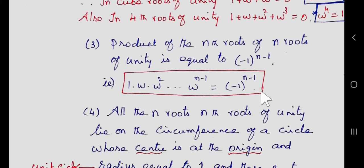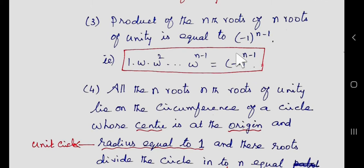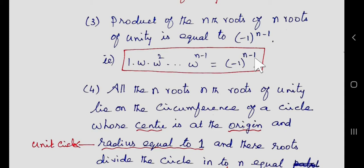Now let us see the product. The product of nth roots of unity is equal to minus 1 the whole power n minus 1. So the product 1 times omega times omega square, and so on, times omega power n minus 1, equals minus 1 to the power n minus 1. If you want to find the product of the cube roots of unity, put n equal to 3. Likewise, for the 4th roots of unity, put n equal to 4.